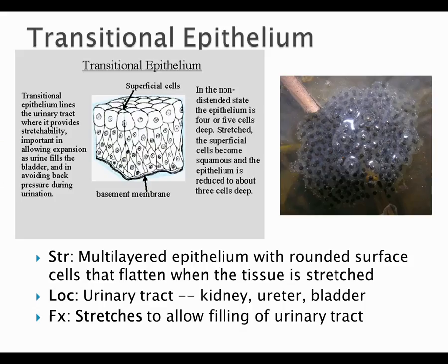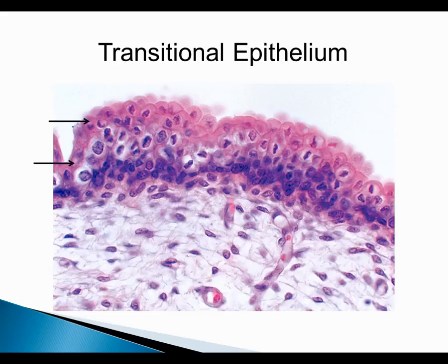The last epithelial tissue type is transitional. It doesn't fall neatly into other categories — it's multilayered but not organized like other stratified epithelia; it's kind of globular. That's what makes it good at stretching. You find it in your kidney, bladder, and urinary tract — areas that need to accommodate a large amount of liquid. The transitional epithelium stretches without tearing. Simple squamous, by contrast, is so tightly packed it would just rip apart under that kind of stretch.